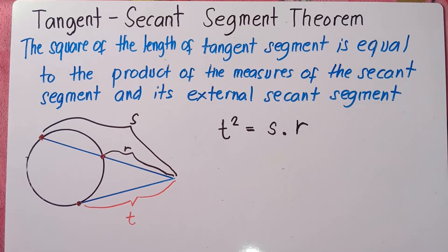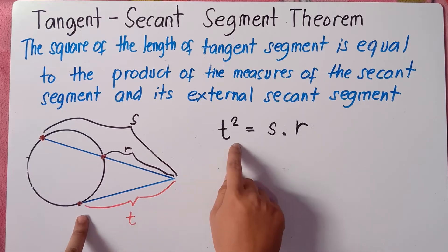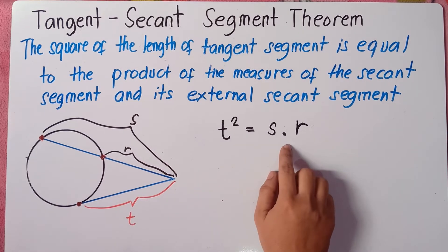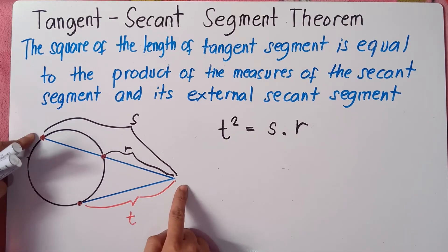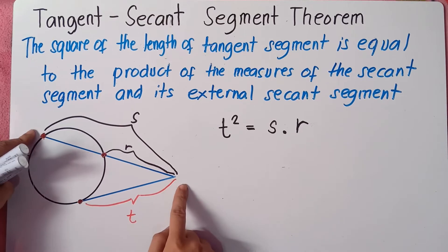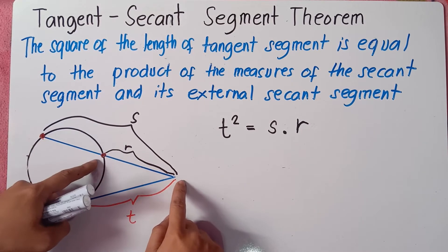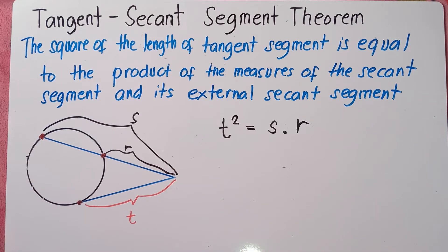To find the tangent: the square of the tangent is equal to the product — meaning two numbers or two variables being multiplied — the product of the secant segment and its external segment. That's the formula for finding the tangent.